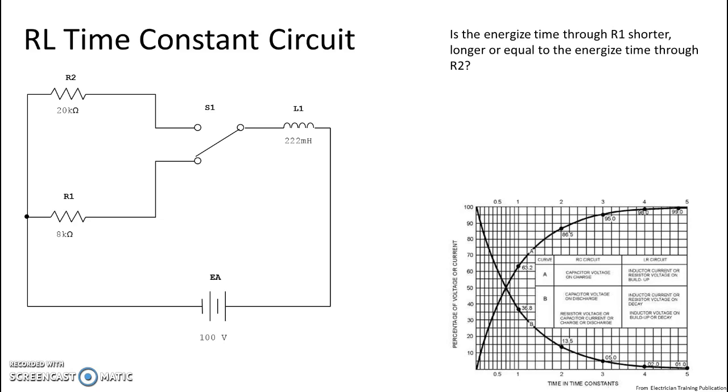So we'll start with R2, and we do 222 milli divided by 20k, and we get 11.1 microseconds. And then we do the path through R1, so 222 milli divided by 8k, we get 27.75 microseconds.